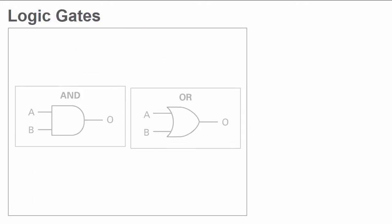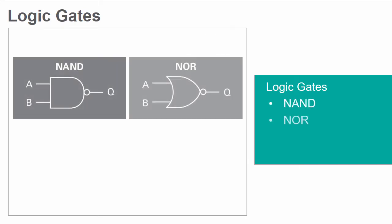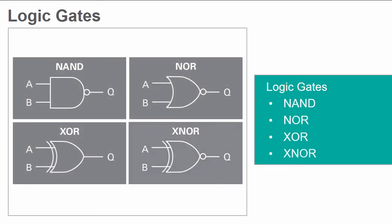In the previous lab we were introduced to the behavior of two logic gates, AND and OR. In this lab we will explore the behavior of the remaining logic gates: NAND, NOR, XOR, and XNOR.